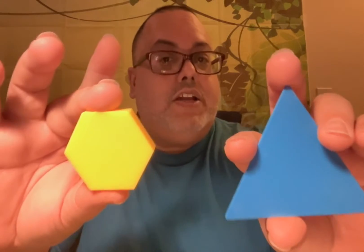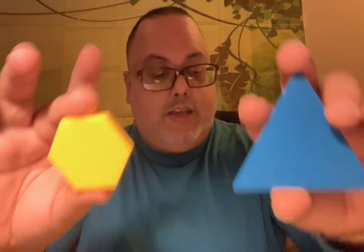The hexagon has six sides, and today we are going to work with the triangle and the hexagon because we're going to try to use other small shapes to make the hexagon and the triangle. Some of these are called pattern blocks.